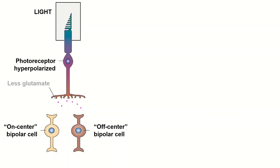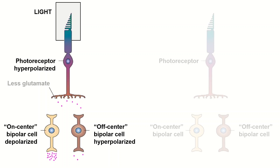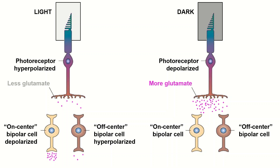In the light, the on center bipolar cell receives less glutamate from the photoreceptors, therefore allowing it to depolarize and release more glutamate. In the dark, the bipolar cell will receive more glutamate from the photoreceptors, therefore making it hyperpolarize and release less glutamate due to the response of the metabotropic receptor.